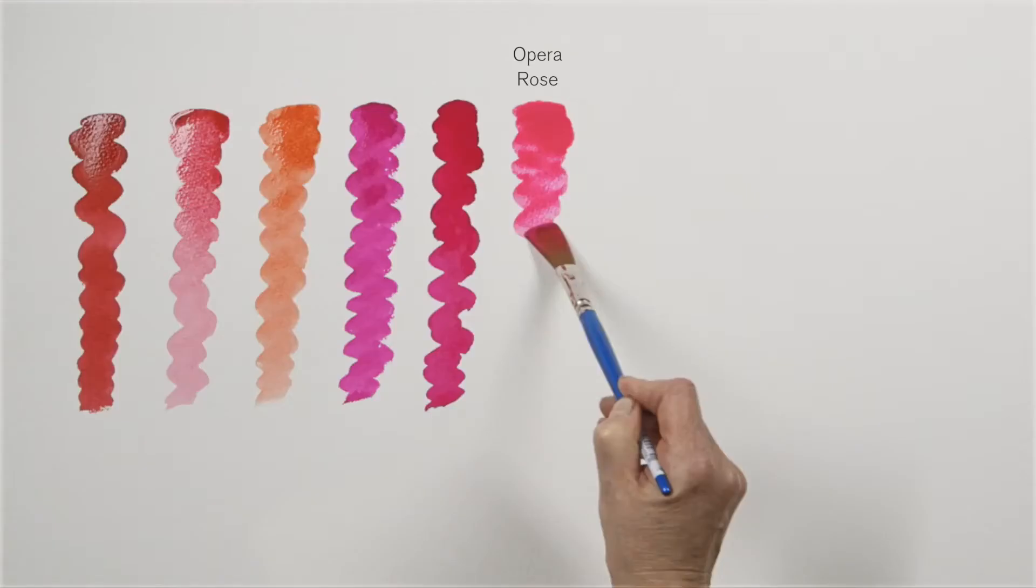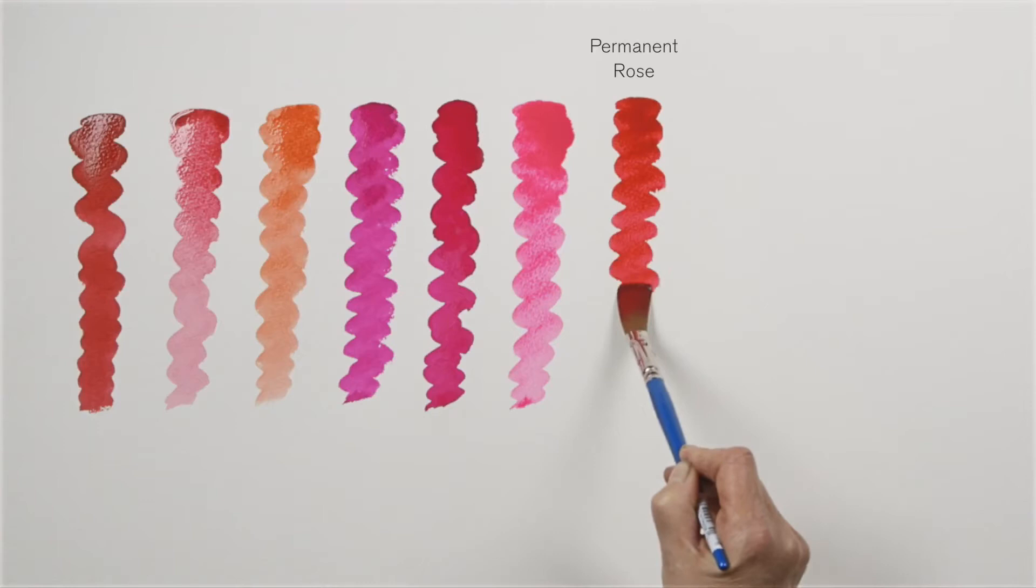Opera rose is particularly useful in botanical study. Here in this watercolour it has almost a fluorescent quality about it. Permanent rose is a beautiful less expensive synthetic alternative.